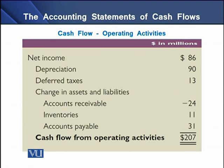A cash flow statement is comprised of three different sections. The first is the operating activities section. Cash flows from operating activities are computed by adjusting net income for non-cash items, non-operating items, and changes in net working capital items. On the screen, you can see that for net income, there is an adjustment for non-cash items in terms of depreciation and deferred taxes, and a second adjustment for changes in net working capital items.